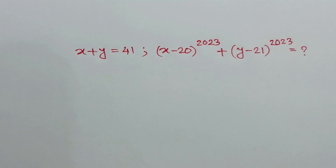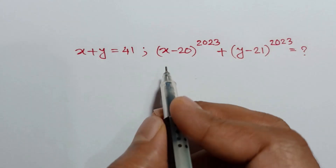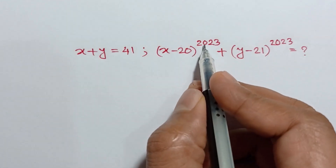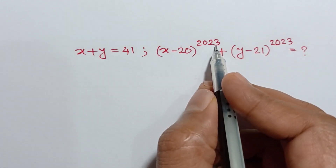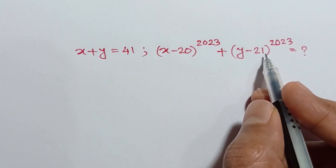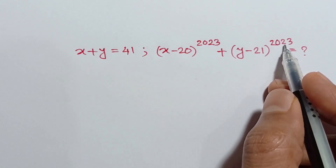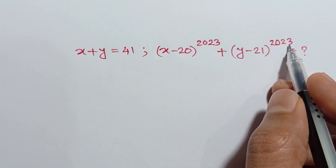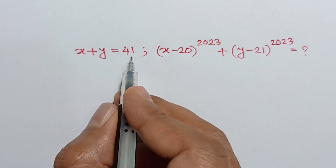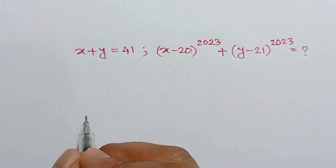Hi everyone. In this video, I am going to show how to find the value of (x minus 20) whole to the power 2023 plus (y minus 21) whole to the power 2023, where x plus y is equal to 41.